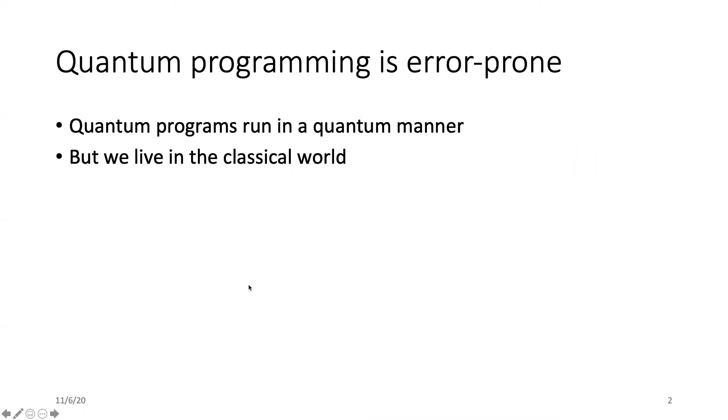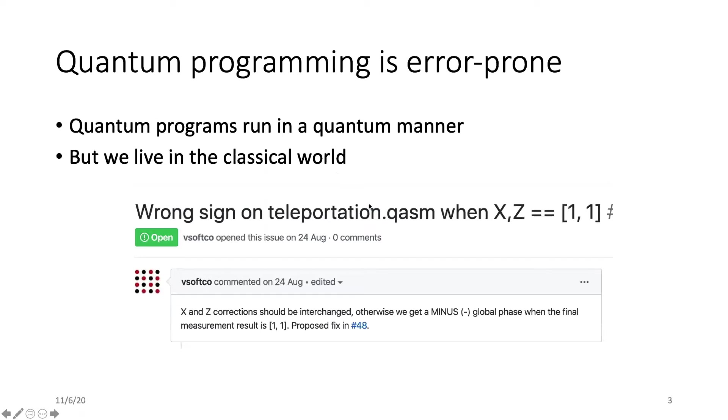It is quite common to make mistakes in programming, and things are even worse in quantum, because quantum programs run in a quantum manner, but we humans live in a classical world. For example, here I took a screenshot from the GitHub repo of one of IBM's projects. It was reported that this example quantum teleportation program is wrong. Actually, the order of two gates are interchanged in this program.